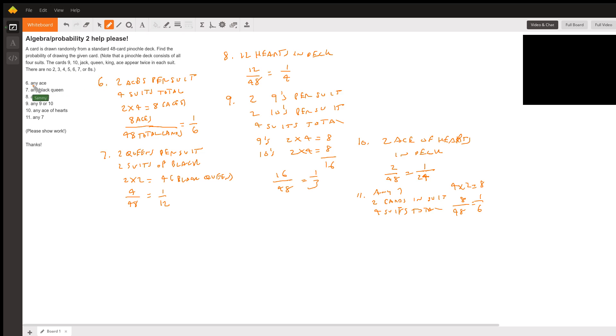Let's start with number 6: any ace. We have two aces per suit, and we have a total of four suits, so it'd be 2 times 4 equals 8. We have a total of eight aces divided by a total of 48 cards in the deck, so that'd be one-sixth probability.